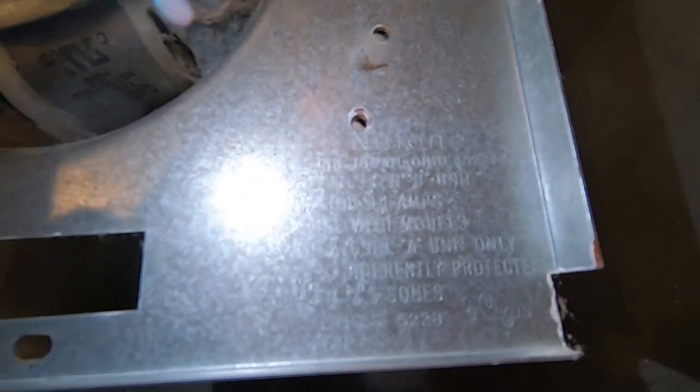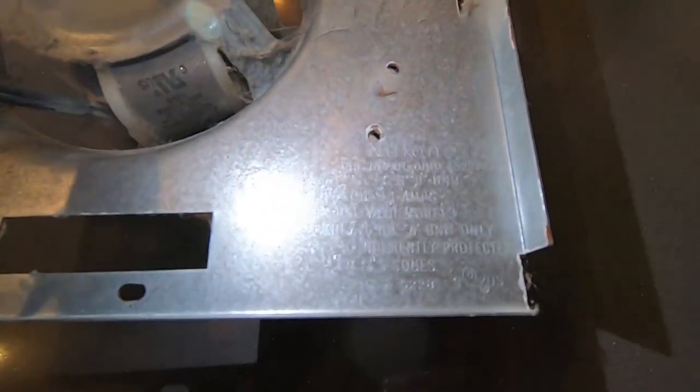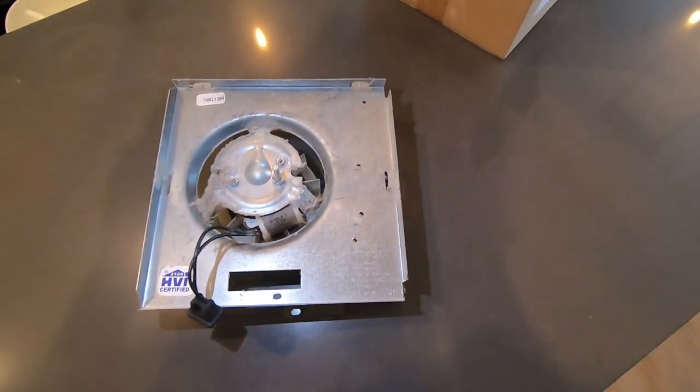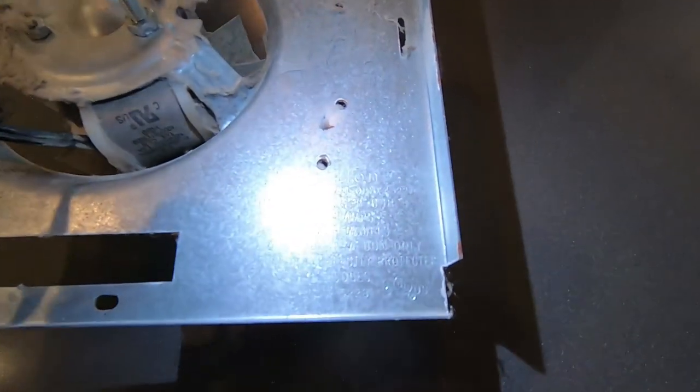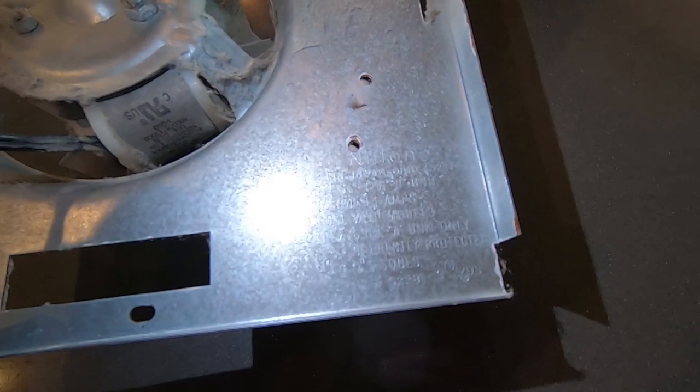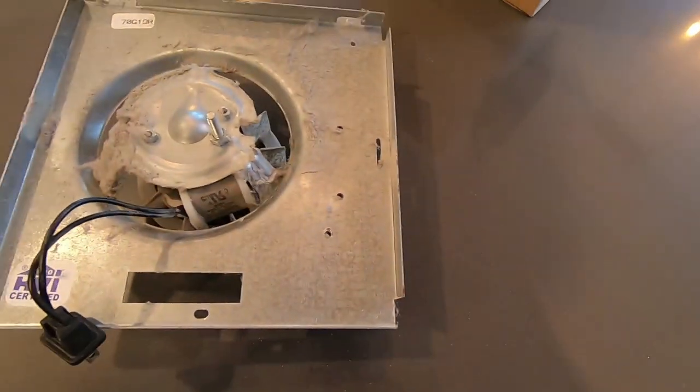That model number is what you want to be able to find. It's gonna be on this assembly. It's probably gonna be difficult to see. Clean it up really well. Once you do that, take that model number, that's gonna be your key. Then I just went on to Amazon and did some searching and I found the replacement.